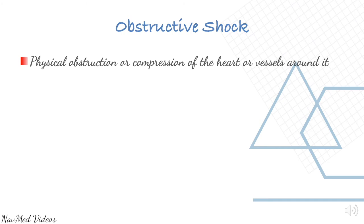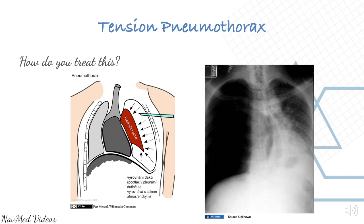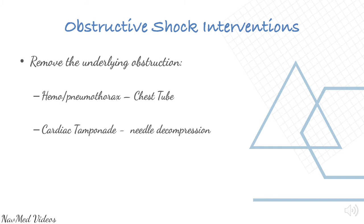Obstructive shock is a physical obstruction or compression of the heart or vessels around it, and can be caused by cardiac tamponade, pneumothorax, or tensioned hemothorax. Tensioned pneumothorax is where air gets trapped in the pleural cavity. Obstructive shock interventions: remove the underlying obstruction. If there is a hemo- or pneumothorax, place a chest drain. If there is cardiac tamponade, perform pericardiocentesis or needle decompression.